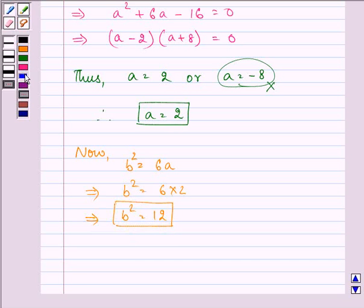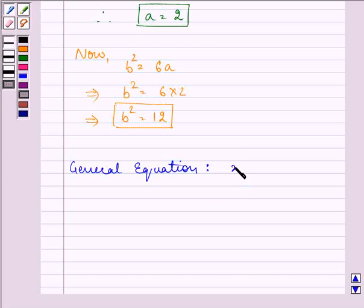We know the value of a and b. Therefore, we can write down the general equation of the hyperbola as x²/4 - y²/12 = 1.